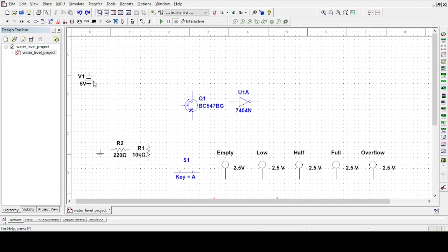This component is a 5V DC source, BC547 transistor, NAND gate, some resistors, switch, and some LEDs. Now I am connecting 220 ohm resistor with the base and the 10K resistor with the collector, and NAND gate with the collector.